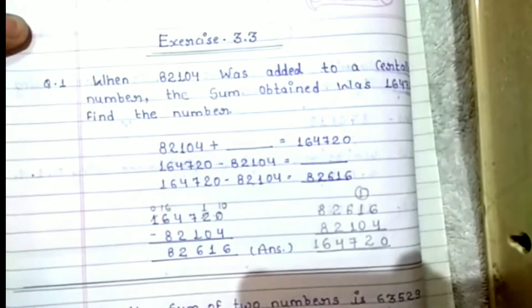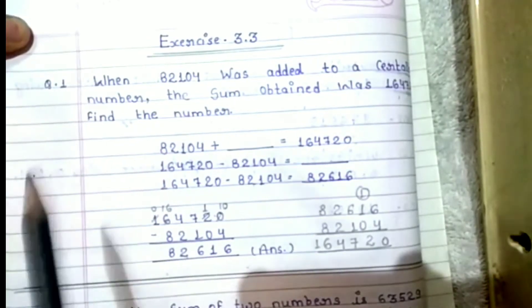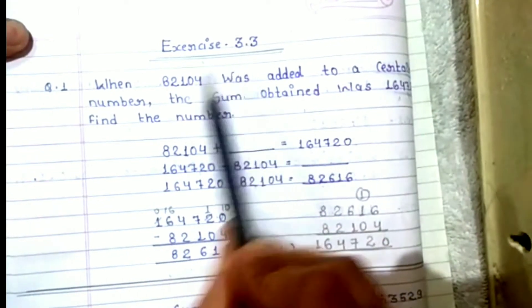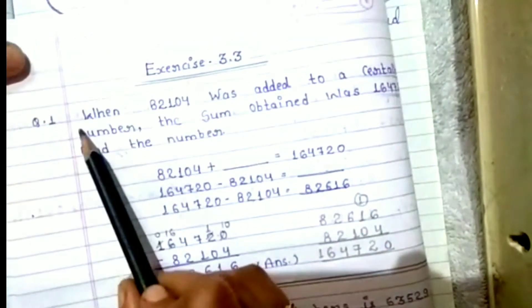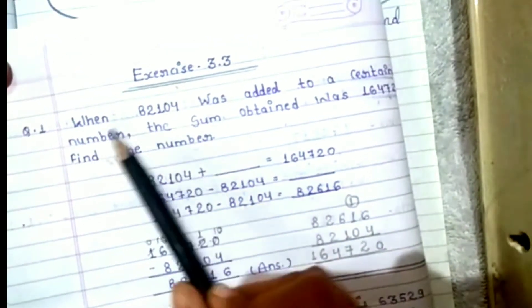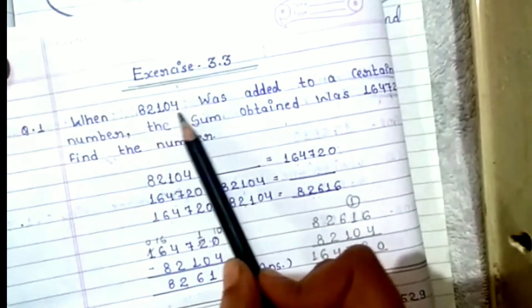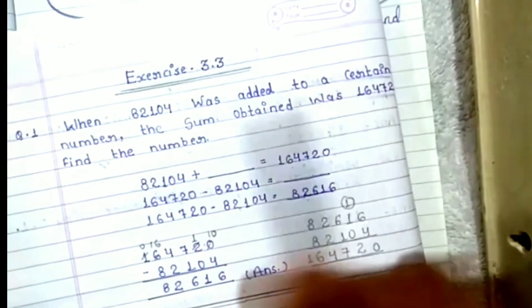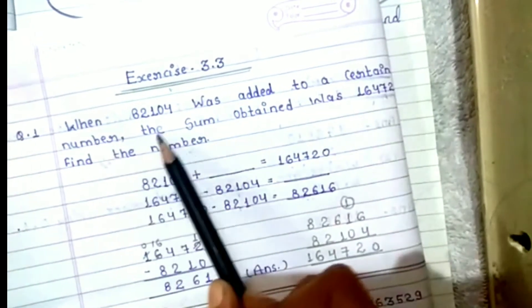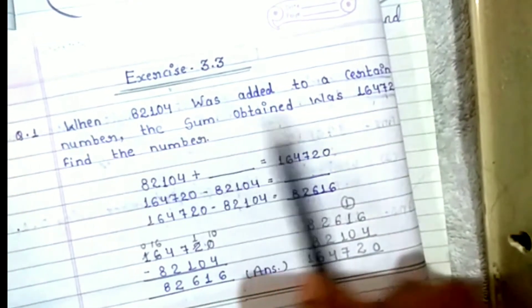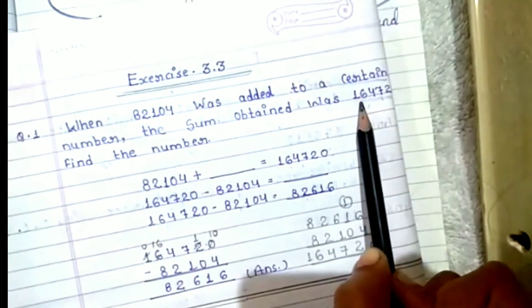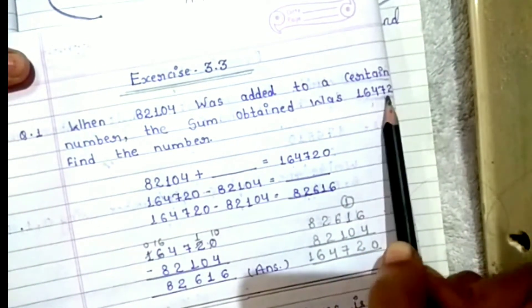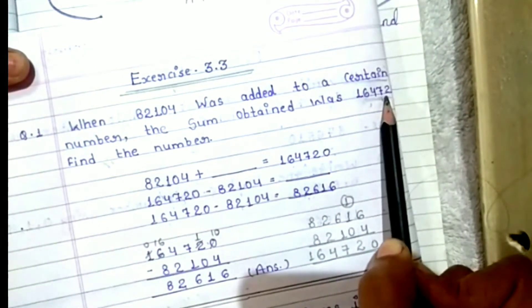Students, this is exercise 3.3. So first question is: when 82,104 was added to a certain number, the sum obtained was 1,64,720. Find the number.